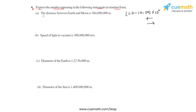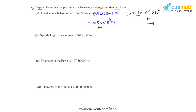We will take part A first. It says the distance between Earth and Moon is this given large number. This can be written as the number with the decimal after the last zero, times 10 raised to 0. The decimal should be moved between 3 and 8 so that we get 3.8, which lies in the required range. Counting the places: 1, 2, 3, 4, 5, 6, 7, and 8. So we write it as 3.84 times 10 raised to 0 plus 8, giving a power of 8. Therefore, 3.84 × 10⁸ meters is the distance between Earth and Moon in standard form.